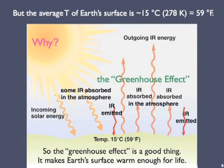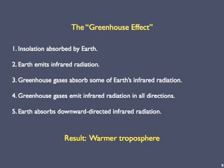The greenhouse effect is fundamental to understanding Earth's climate system. So let's look at it in a couple of ways. First, the verbal way. Insolation is absorbed by Earth. Next, Earth emits infrared radiation. Greenhouse gas molecules absorb some of Earth's infrared radiation. Greenhouse gas molecules emit infrared radiation in all directions. Some continues out into space, but Earth absorbs downward-directed infrared from greenhouse gases. This raises the temperature of Earth's troposphere.